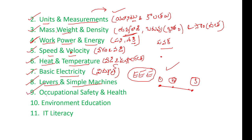The ninth unit is occupational safety and health. We have general basic concepts about safety. When we work, we have precautions — that is occupational safety. There is ALP — assistant loco pilot — we have to try to drive safely and maintain health. The tenth unit is environmental education, which is very important in the present scenario. Environment topics are open and relevant, including the G20 and current environmental scenarios.